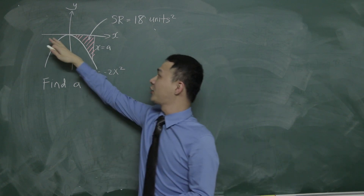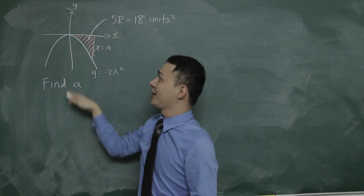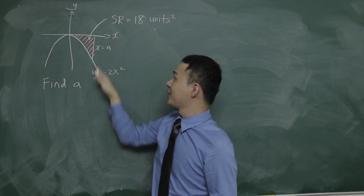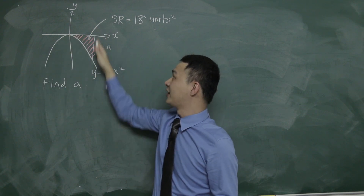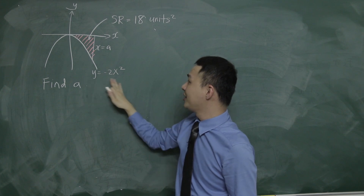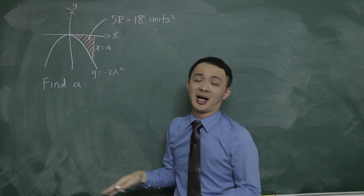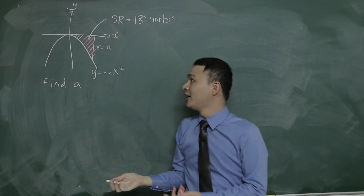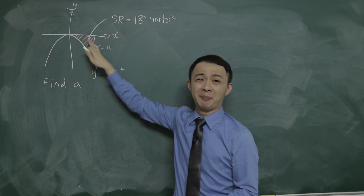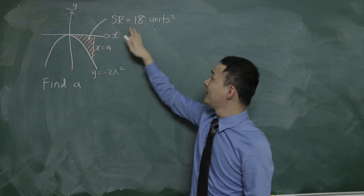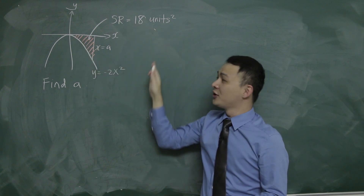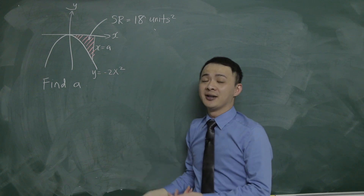For this integration question, you can see an x-axis and y-axis, a curve, and a vertical straight line which is x equals to a. The curve equation is y equals to negative 2x squared. The question also tells you the shaded region shown in pink is 18 unit squared, and they ask you to find a.